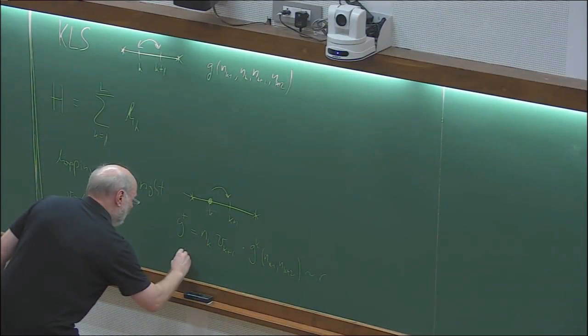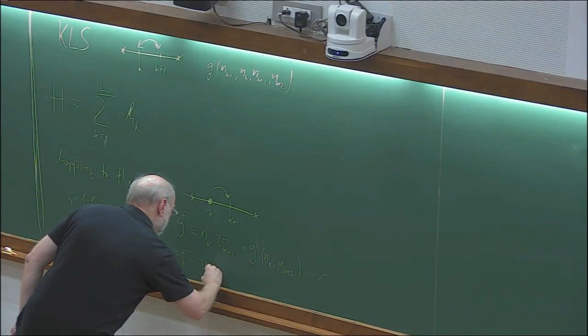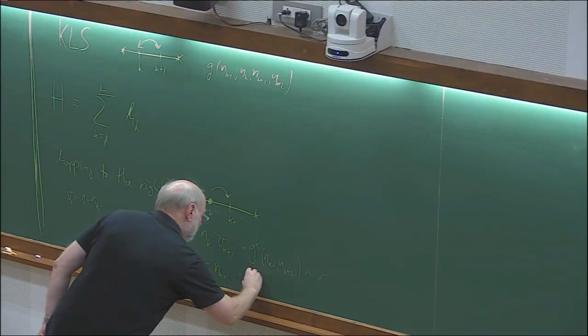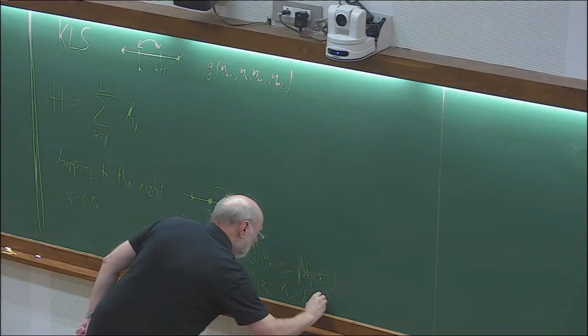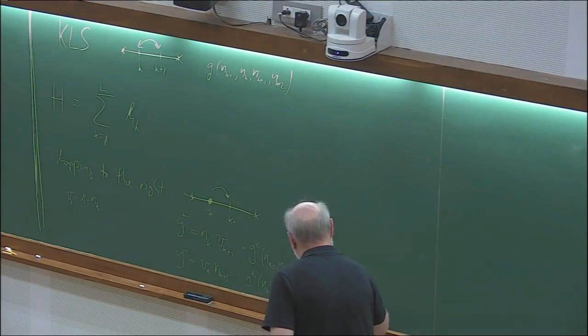Similarly, for left hopping, G- must have a particle at K+1 and a vacancy at K, so it is proportional to V_K N_{K+1} times a function of delta and epsilon—the same function except that epsilon is replaced by minus epsilon—and proportional to L instead of R.